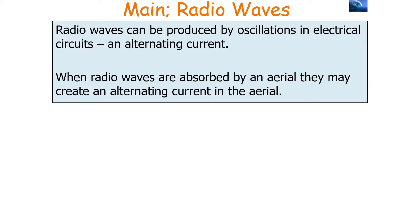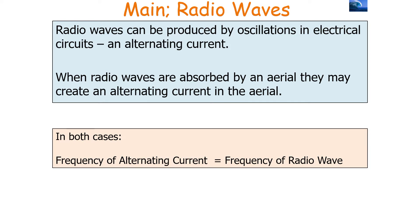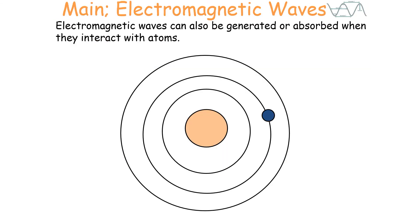To summarise: radio waves can be produced by oscillations in electrical circuits — an alternating current. When radio waves are absorbed by an aerial, they may create an alternating current in the aerial. In both cases, the frequency of the alternating current is equal to the frequency of the radio wave.